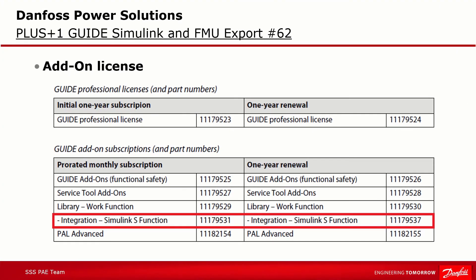This S-Function feature is available via its own add-on license called Integration Simulink S-Function. Like any other add-on license, a Guide Professional parent license is needed. Since this functionality relates to MATLAB Simulink only, a MATLAB license is required to generate the S-Function, and the path to the MATLAB executable file needs to be assigned.